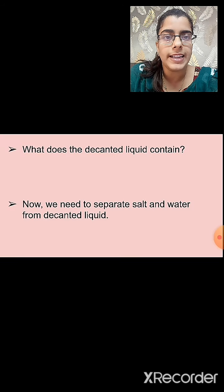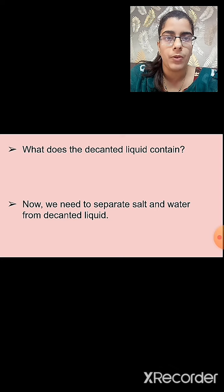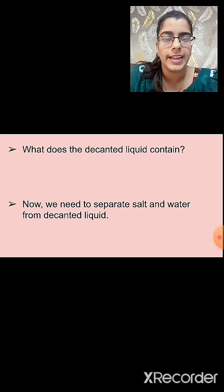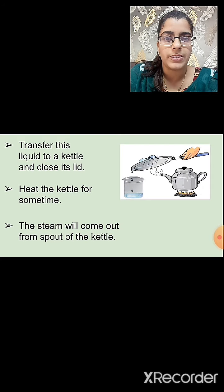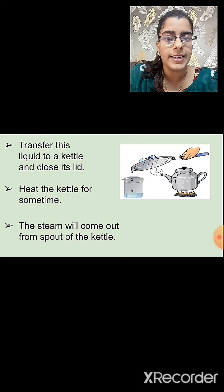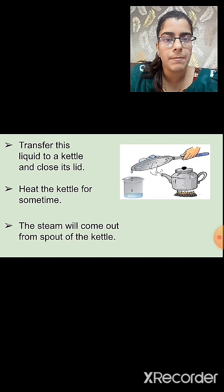The decantate liquid contains both salt and water. Now we need to separate the salt from the water, which we can do through the evaporation process. Transfer the salt and water mixture into a kettle, close its lid, and heat the kettle for some time.